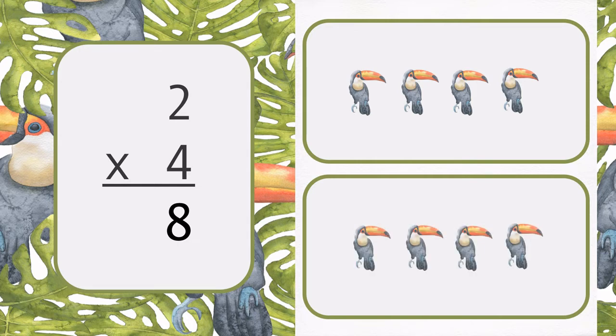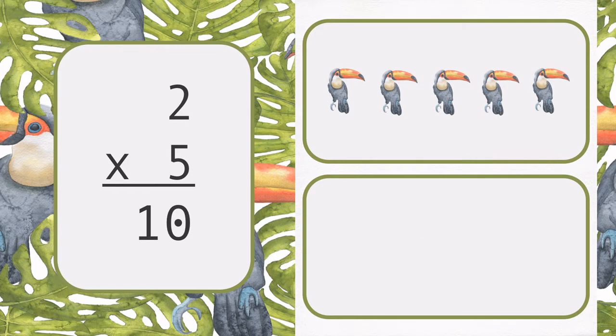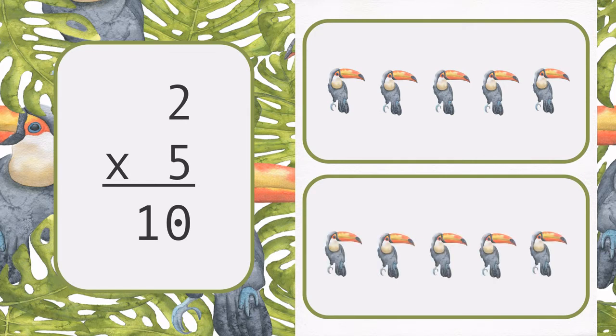There are two groups of 4. 2 times 4 is 8. There are two groups of 5. 2 times 5 is 10.